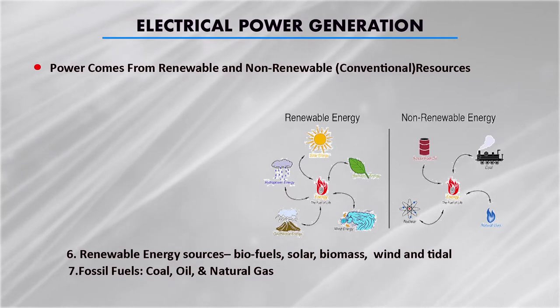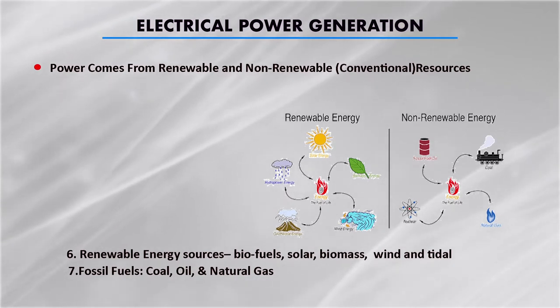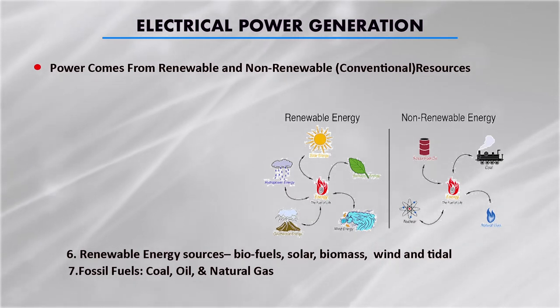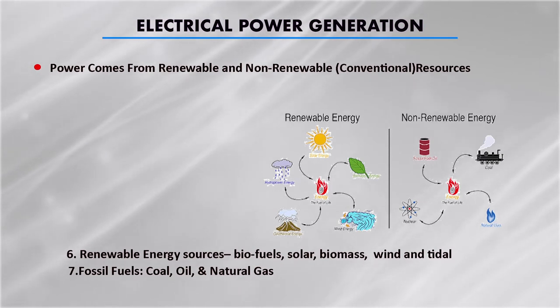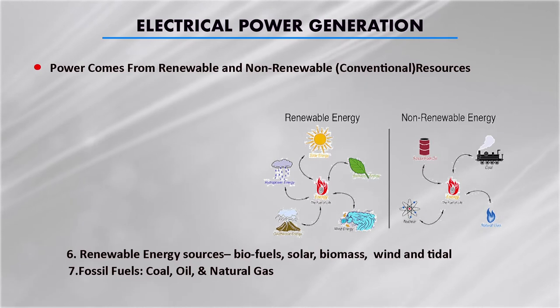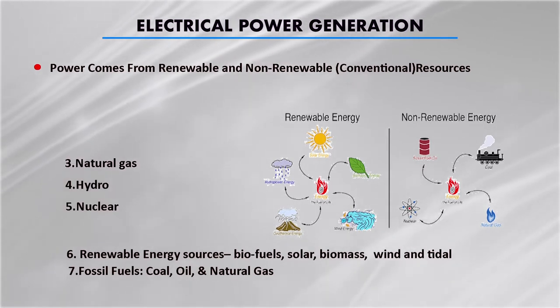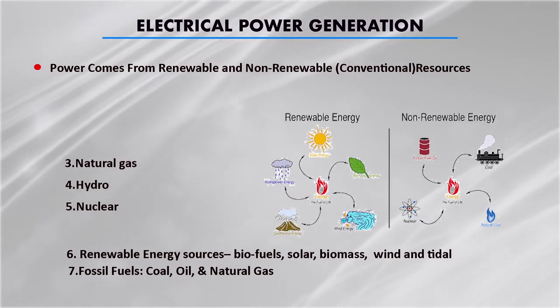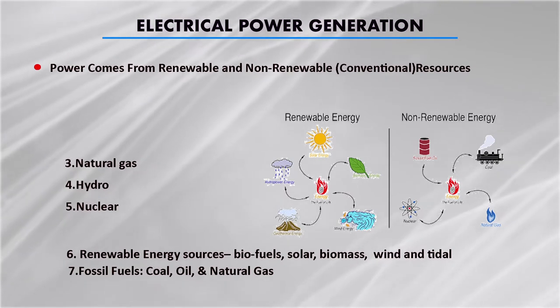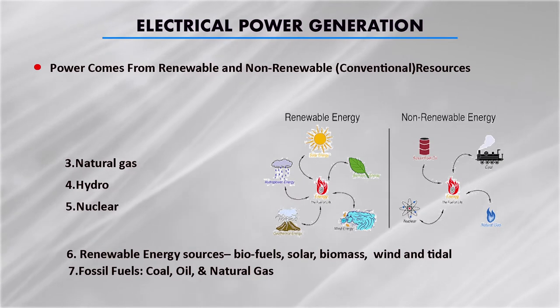Various conventional electrical energy sources include solid fuels, liquid fuels, natural gas, hydro, and nuclear. In coal-based thermal stations, steam is produced using the fuel and the steam runs a turbine. This turbine provides mechanical energy, which is then converted into electrical energy using a generator. Similarly, in hydropower plants the head of water is used to run a turbine, and the turbine's mechanical power is converted into electrical power using a generator.